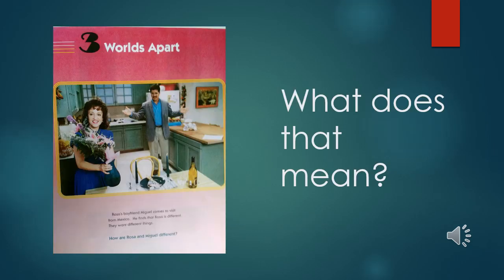Let's begin by looking at your photo stories, Worlds Apart, Unit 3. I will read. Rosa's boyfriend Miguel comes to visit from Mexico. He finds that Rosa is different. They want different things. How are Rosa and Miguel different? Look at those words again — Worlds Apart. What does that mean?